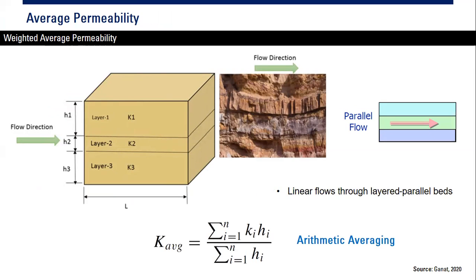The reservoir is very heterogeneous and we have many permeability values, but at the end of the day we need to do averaging to get only one reduced or average permeability.